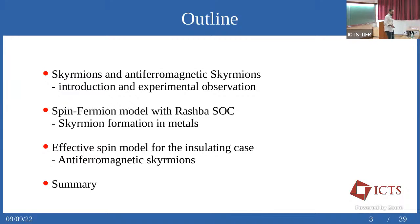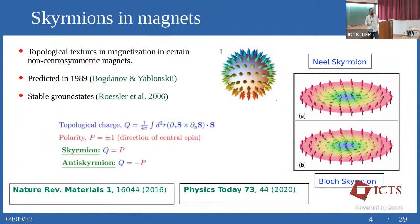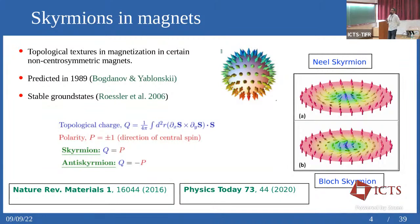What are skyrmions? The story begins with Tony Skyrme in the context of particle physics, where skyrmions were proposed as models for nuclear particles. What we are interested in today is the existence of such textures in the magnetization of certain non-centrosymmetric materials. This was predicted in 1989, and theoretically it was shown that such textures can indeed be ground states of continuum models in a 2006 paper.